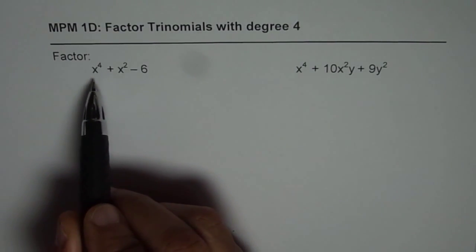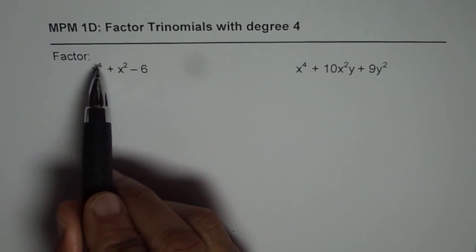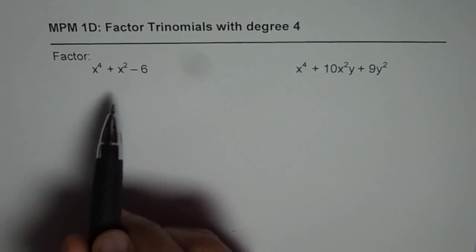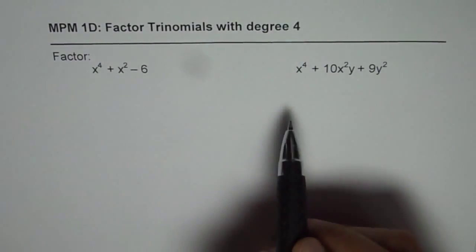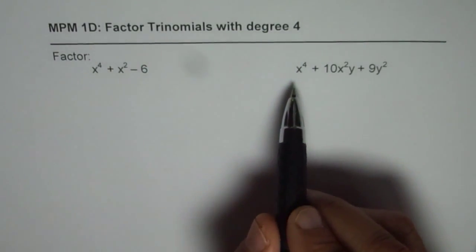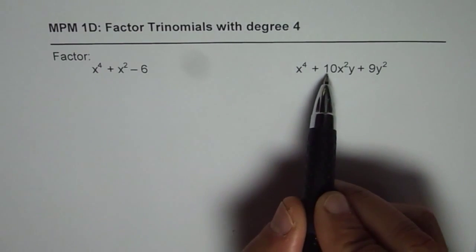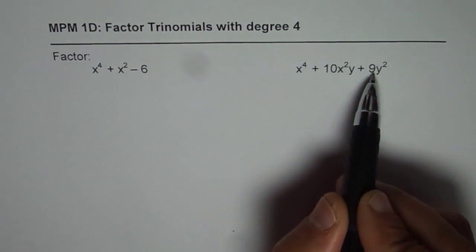So the question is: factor x⁴ + x² - 6. I have two similar problems, similar in that the degree of the trinomials is 4. The second one is x⁴ + 10x²y + 9y².